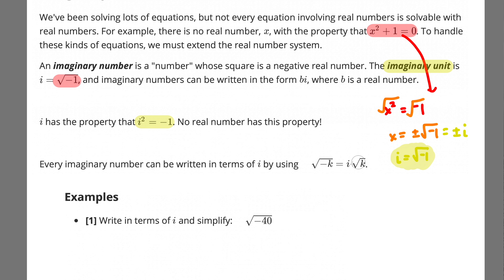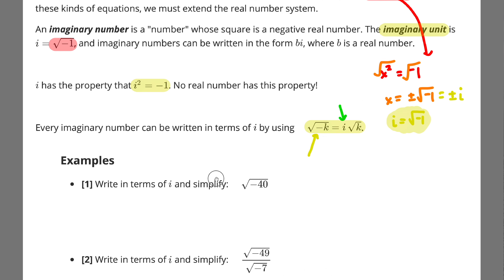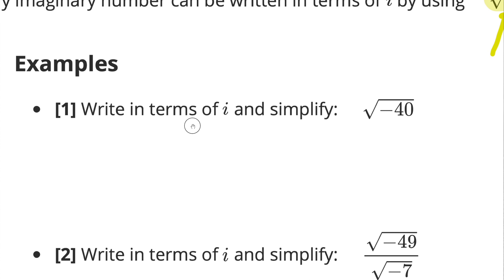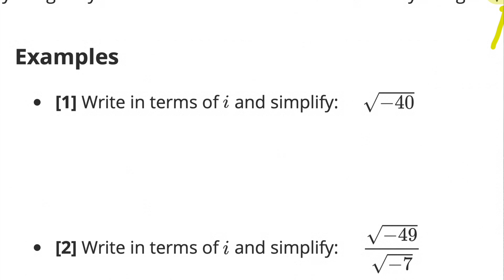You can write every imaginary number in a standard form. If there's a negative under the radical, you can factor it out as i. That's essentially what we're going to do on these problems. The first one says: write in terms of i and simplify √(-40). The first thing I'm going to do is factor out √(-1) — so √(-1) times √40.